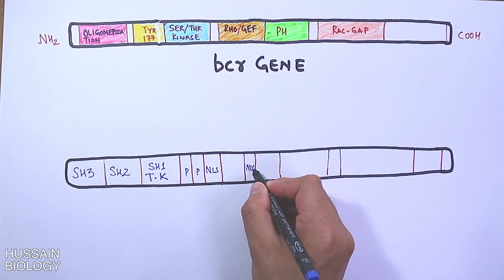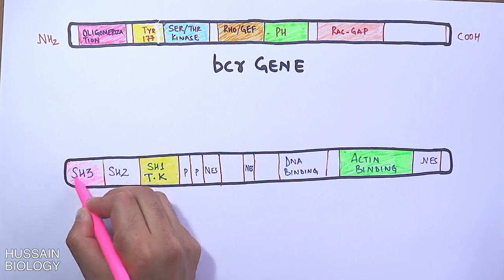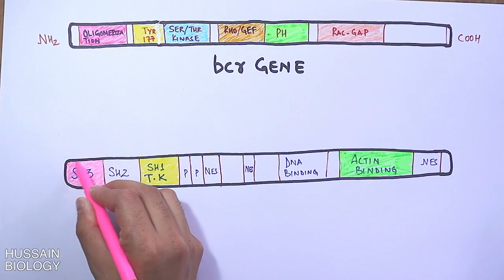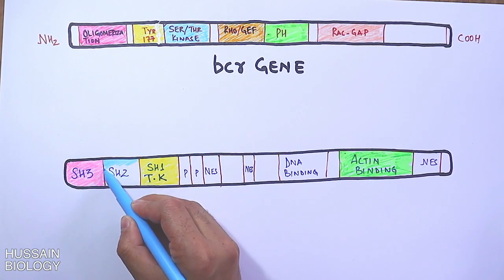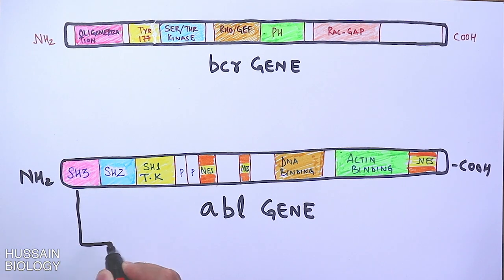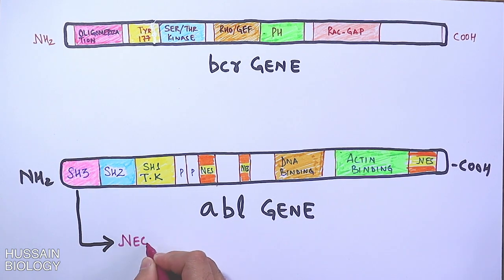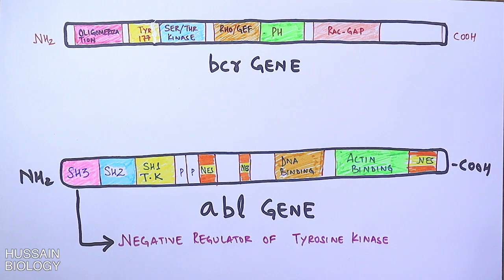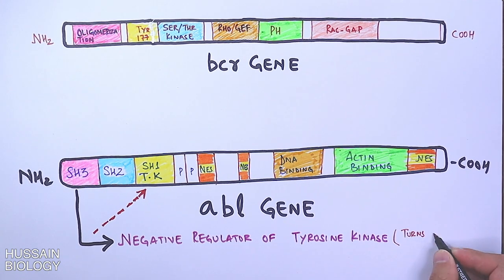The ABL gene contains SH3, SH2, and SH1 tyrosine kinase domains, as well as NES domain, and DNA-binding and actin-binding domains. The SH3 domain is one of the most important domains of the ABL gene, as it is the negative regulator of ABL's tyrosine kinase domain. In normal gene regulation, this SH3 domain turns off the kinase activity of the ABL gene — it has an inhibitory action.